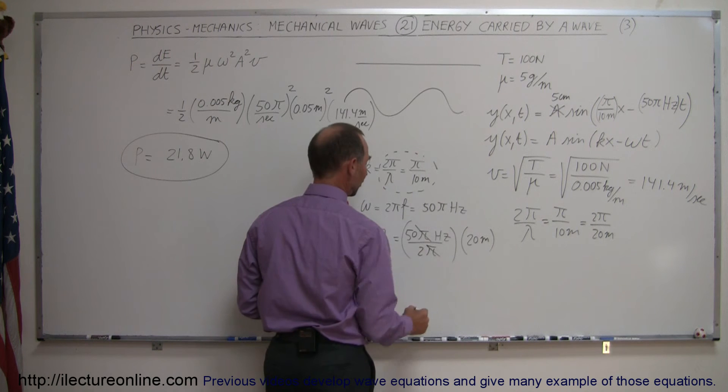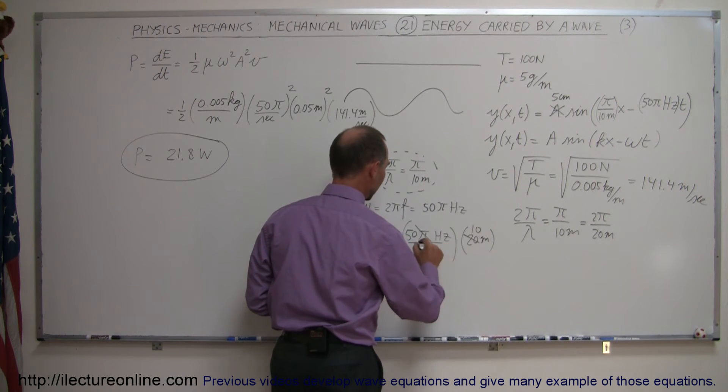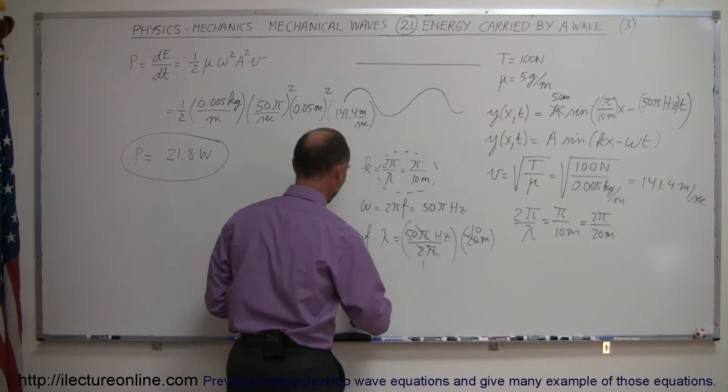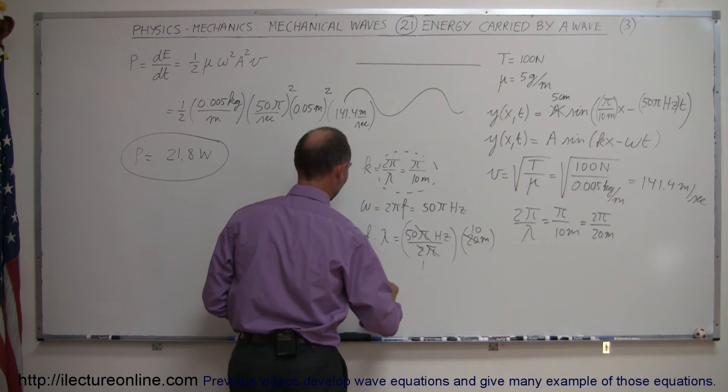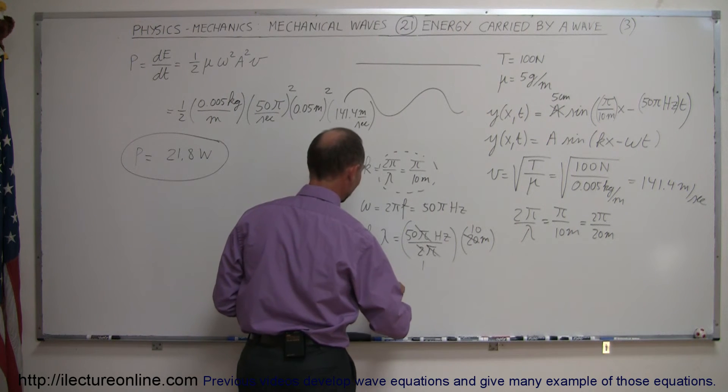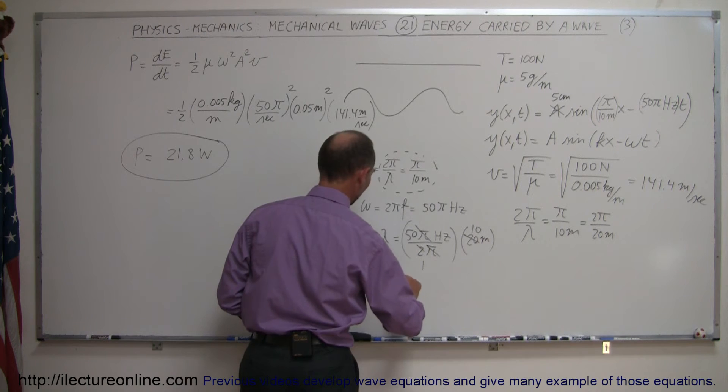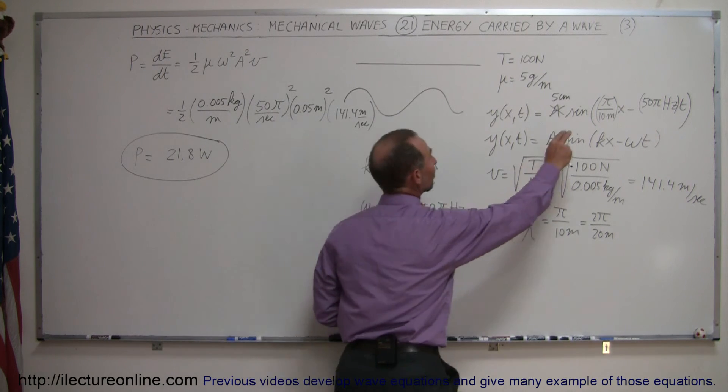This pi cancels out this pi, this 20 becomes 10, this 2 becomes a 1, 10 times 50 is 500, so the actual velocity, V is equal to 500 meters per second, if I use the numbers that I plugged in there.